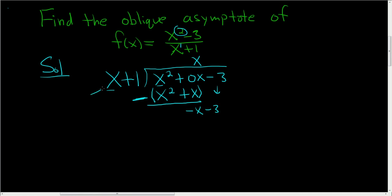What do you multiply by x in order to get negative x? Well, negative 1. So you write the negative 1 here. Negative 1 times x is negative x. Negative 1 times 1 is negative 1.